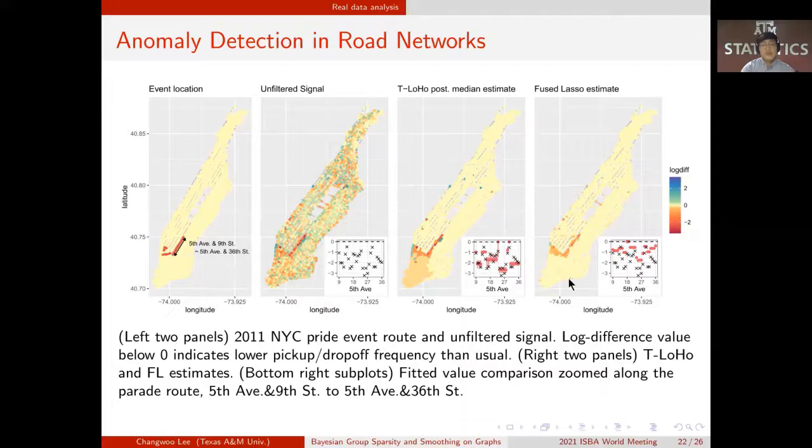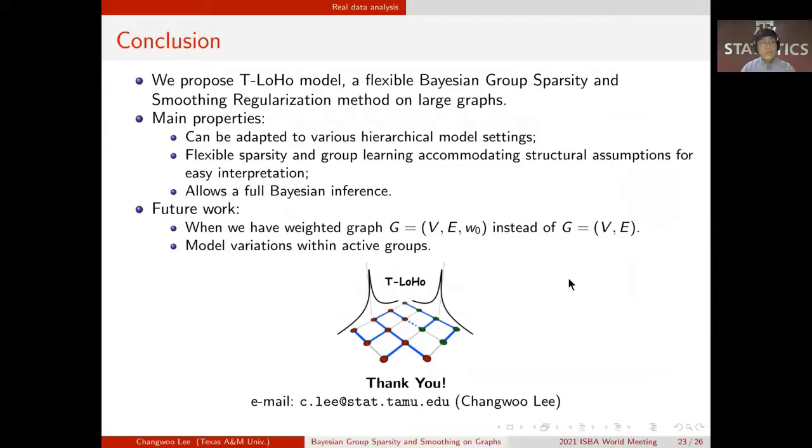So we have proposed T-LoHo model of flexible Bayesian group sparsity and smoothing regularization method on large graphs. It can be adapted to various hierarchical model settings and provides flexible sparsity and group learning with a full Bayesian inference. Interesting future work will be investigating when G is now a weighted graph, and including model variations within active groups.